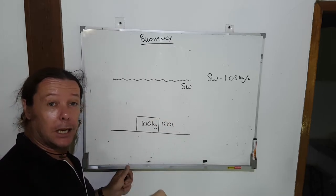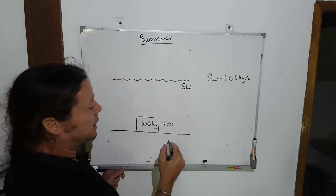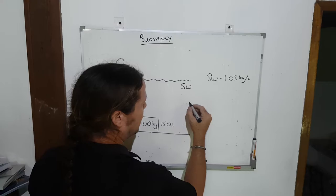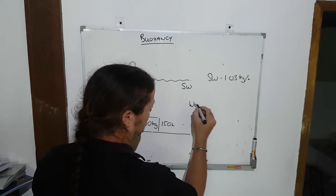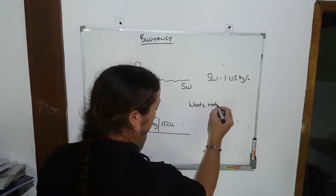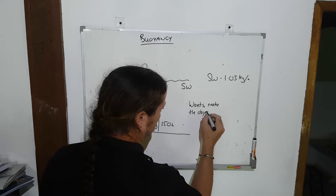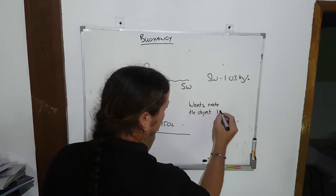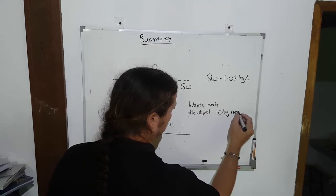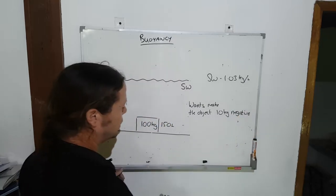We'll discuss that in a moment. Let's have a look at this one here. I'm going to say the question wants me to make the object 10 kilograms negatively buoyant, so it wants it to sink by 10 kilos.